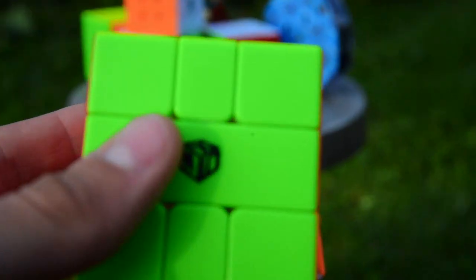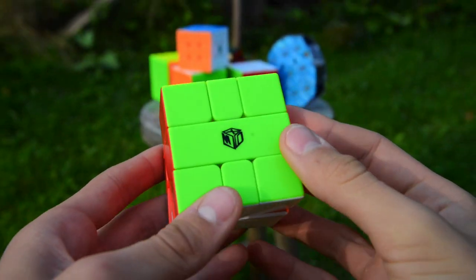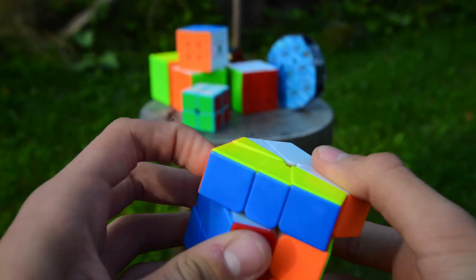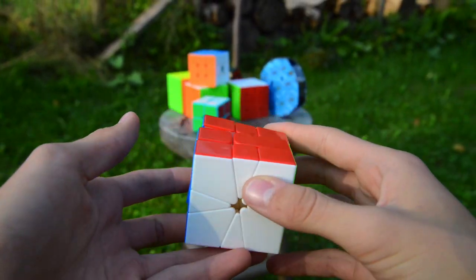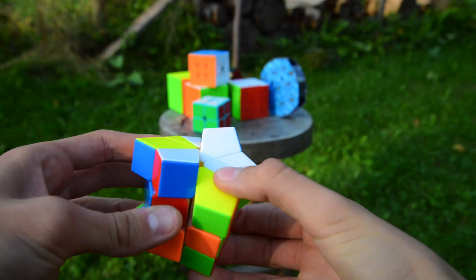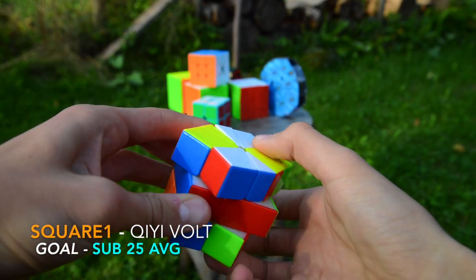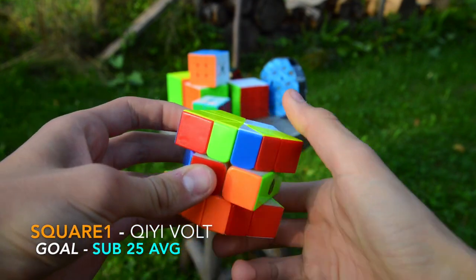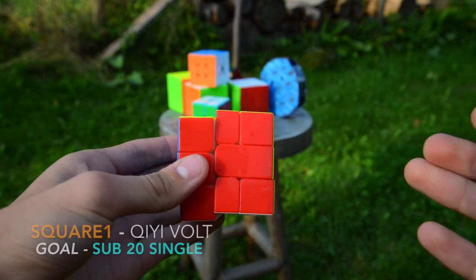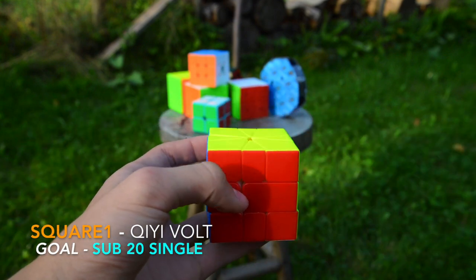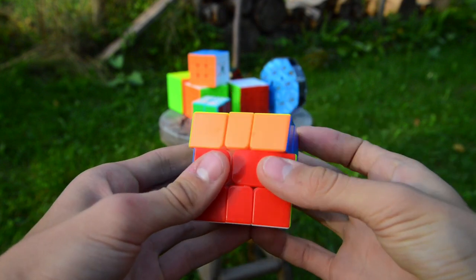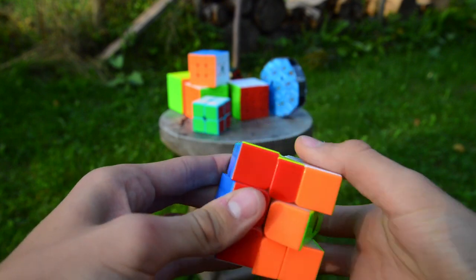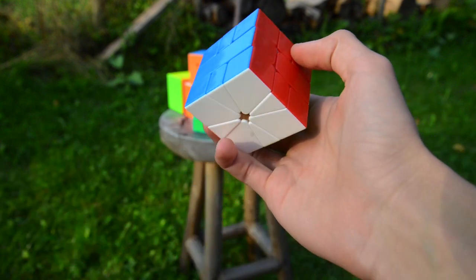Next up is square-1. This is the X-Man Volt Square-1 and I actually do like this cube a lot. It has been broken in way more since I bought it. First off, my goal is another national record: first ever sub-20 single in Latvia and sub-25 average. Not too huge goals. I mean, kind of easy because I average like 23, 22 at home.